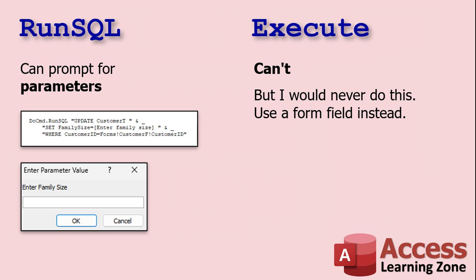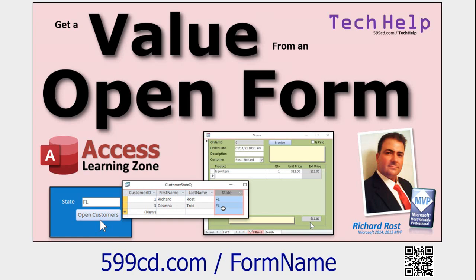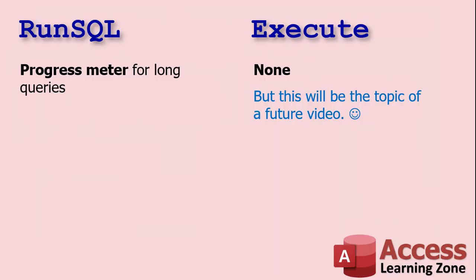RunSQL can prompt the user for parameters — you can put a parameter inside your SQL and it'll prompt for it, though I personally would never use this; I'd get that value from a form field instead. RunSQL also gives you a progress meter at the bottom of the Access window if you're running a long query — say, processing a hundred thousand records over three to five minutes. Execute does not give you that; it is completely silent. However, getting visual feedback with Execute will be the topic of a future video.